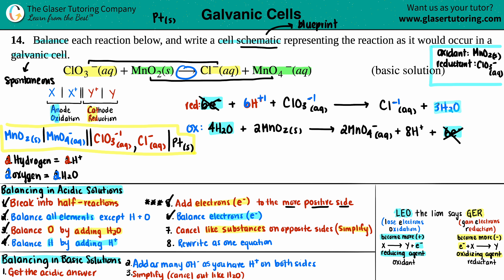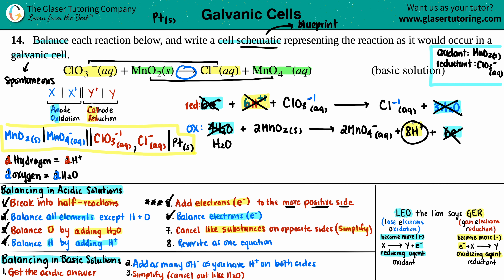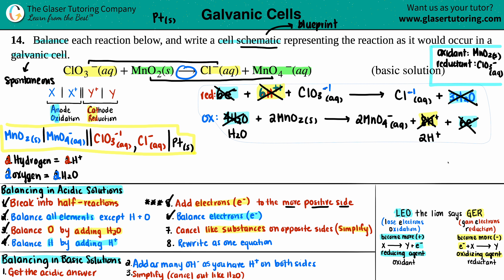Canceling H₂O: four on one side and three on the other — cancel three, leaving one H₂O remaining. Canceling H⁺: six on the left and eight on the right — cancel six, leaving two H⁺ remaining on the right. We can't cancel anything else, so we simplify and prepare to write the combined equation.